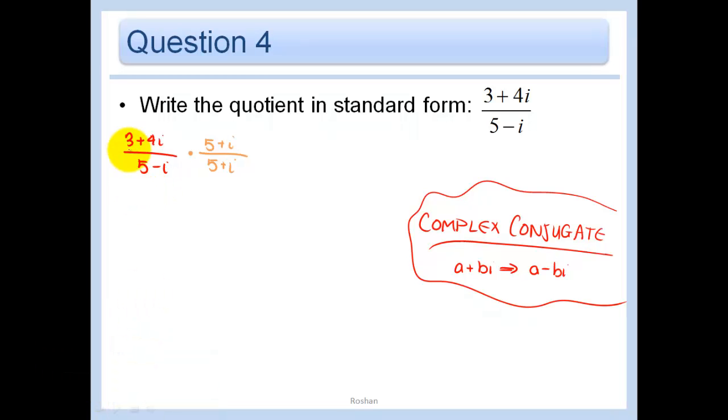And so then I get, let's see, let's FOIL the top. 15. Outer would be plus 3i. Inner would be plus 20i. And the last is plus 4i squared over 25. Again, the outer and the inner are plus 5i minus 5i. And so they cancel out. And then we have minus i squared.